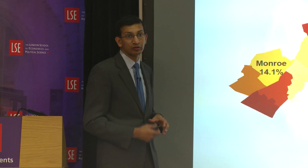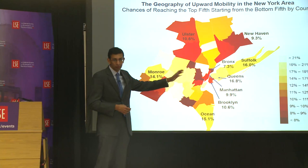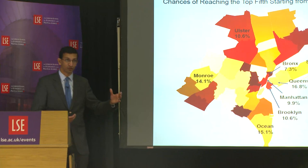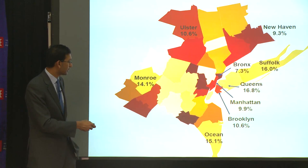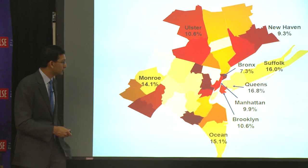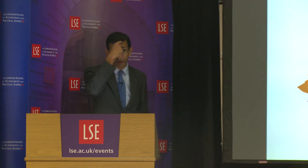Zooming into the New York City metro area and looking at the data by county, we ask what fraction of kids who grew up in each borough — Manhattan, the Bronx, Queens, etc. — ends up making it to the top 20% of the national income distribution. Even within New York, if you're in Manhattan in a low-income family — presumably living in a place like Harlem — you have a 9.9% chance of making it from the bottom to the top, which looks pretty good relative to the US average, but is nowhere near as high as just a few miles away in Queens, where you see 16.8%.